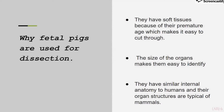Pre-lab question number 4 asks why fetal pigs are used for dissection. They are used for dissection because they have soft tissues at their premature age, which makes it easy to cut through. Also, the size of the organs makes it easy to identify, and most importantly, they have similar internal anatomy to those of humans, and their organ structures are typical of mammals.